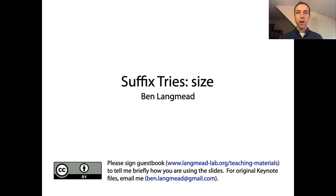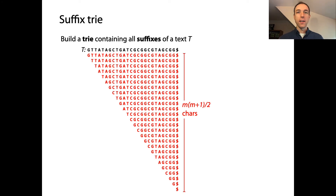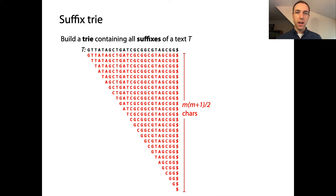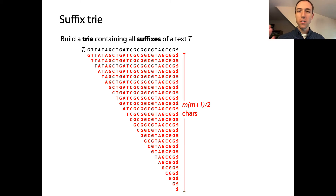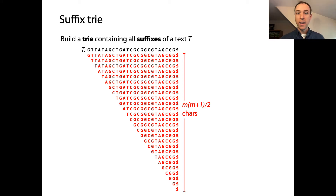We've been looking at suffix tries, and right away when we were introduced to the idea of putting all the suffixes of a text together into some data structure, we were immediately starting to feel anxious that this might be a large data structure. After all, if T is a long string and the data structure has to organize all the suffixes of that string, the number of characters in all those suffixes is growing quadratically with the length of the text.